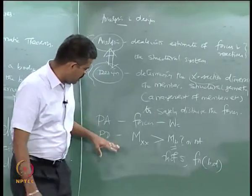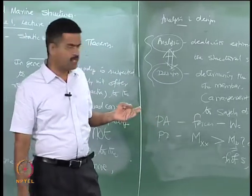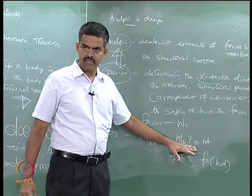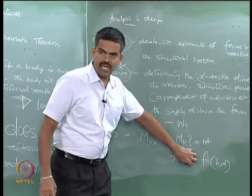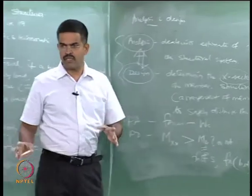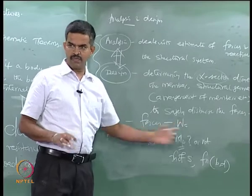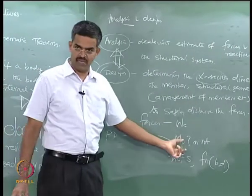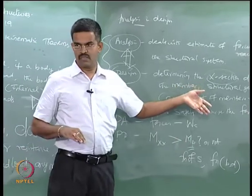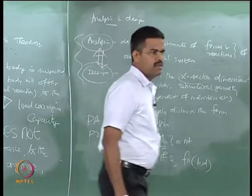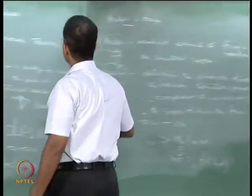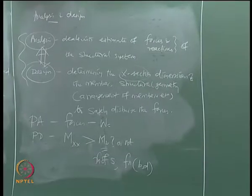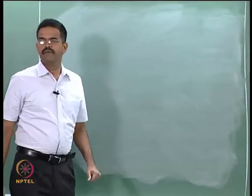One may wonder why we discussed design first and analysis later. Because as long as you do not appreciate what M_p is, and how M_p depends on sectional characteristics, there is no point in finding the collapse load W_c. As long as you do not have a section, you cannot do an analysis. So first we understood the section. Now we will talk about analysis. To do the analysis, we have two theorems available: the static theorem and the kinematic theorem.